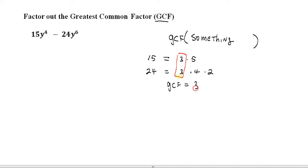All right, what about the variable? You've got y to the 4th and y to the 6th. So y to the 4th, do the same thing. Break it down as y times itself 4 times. And y to the 6th, break it down as y times itself 6 times.